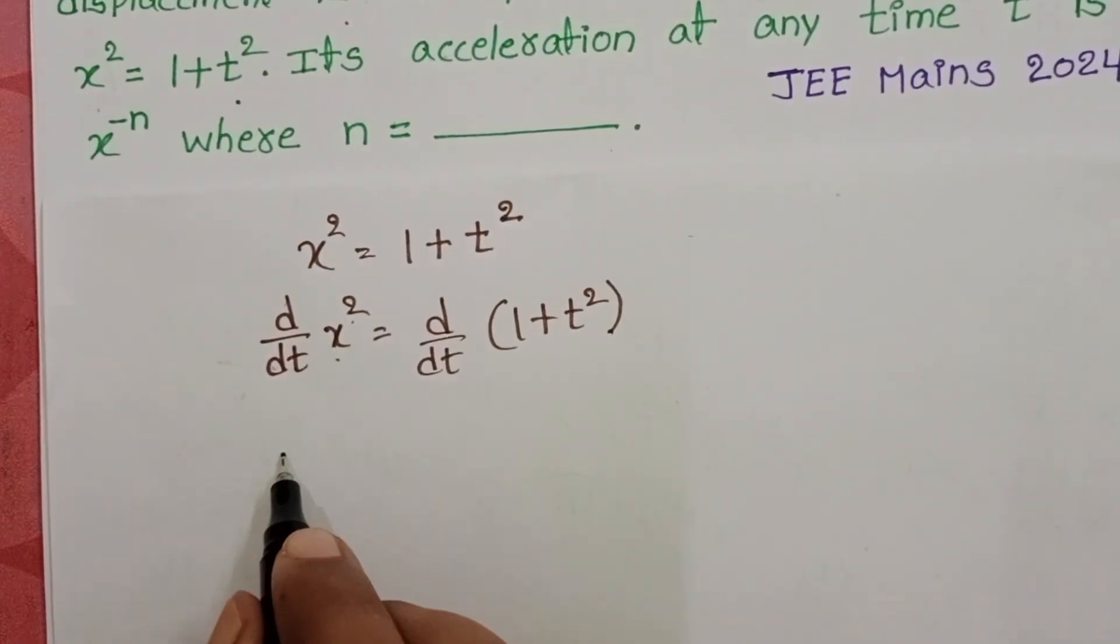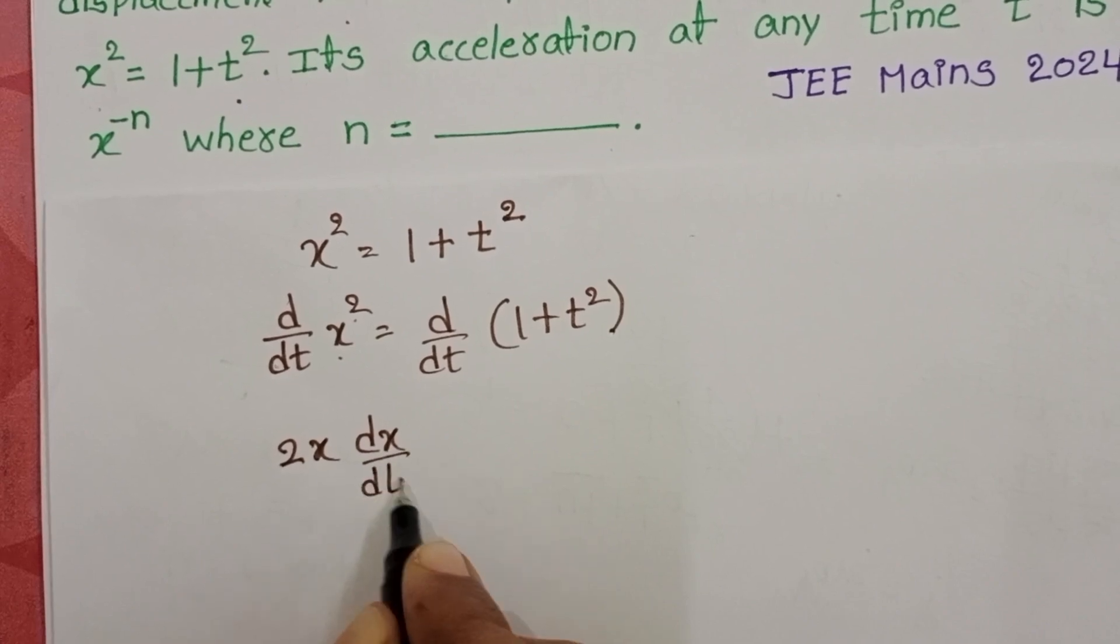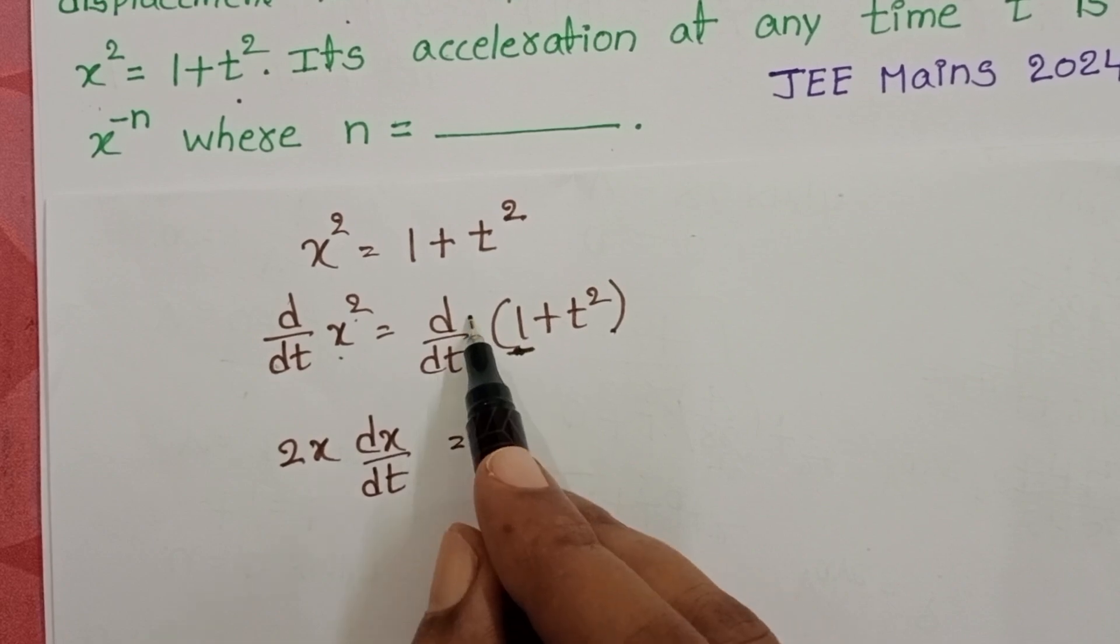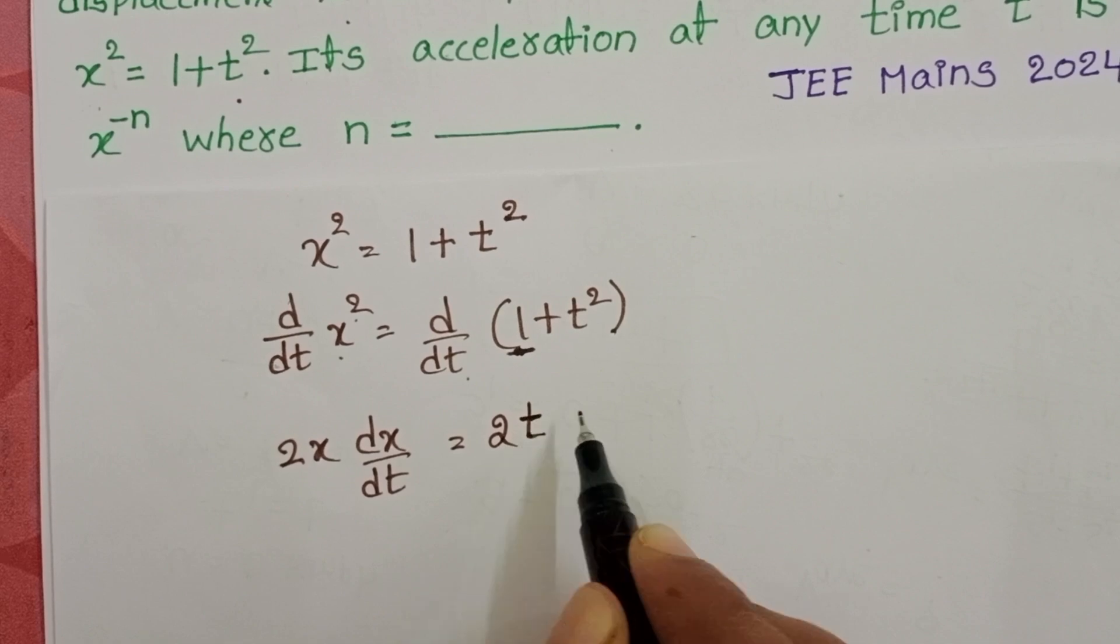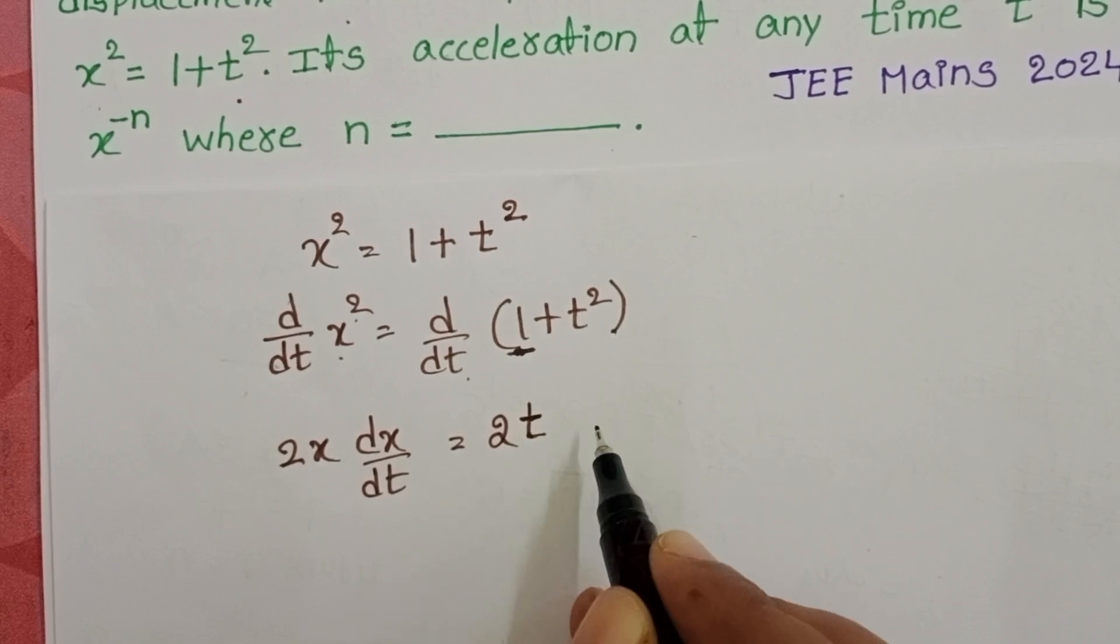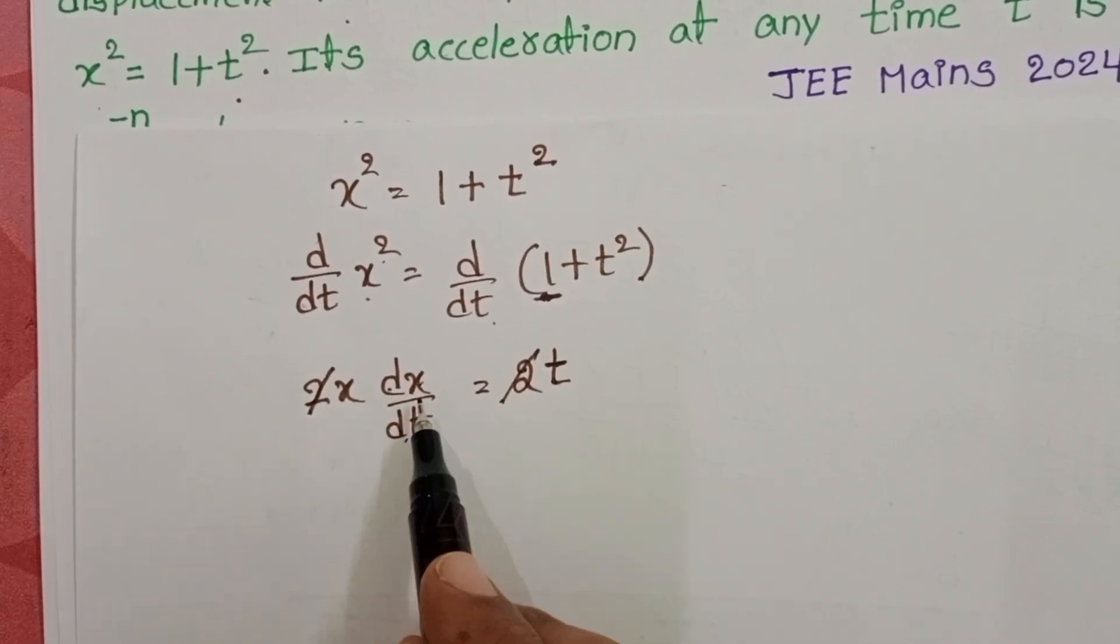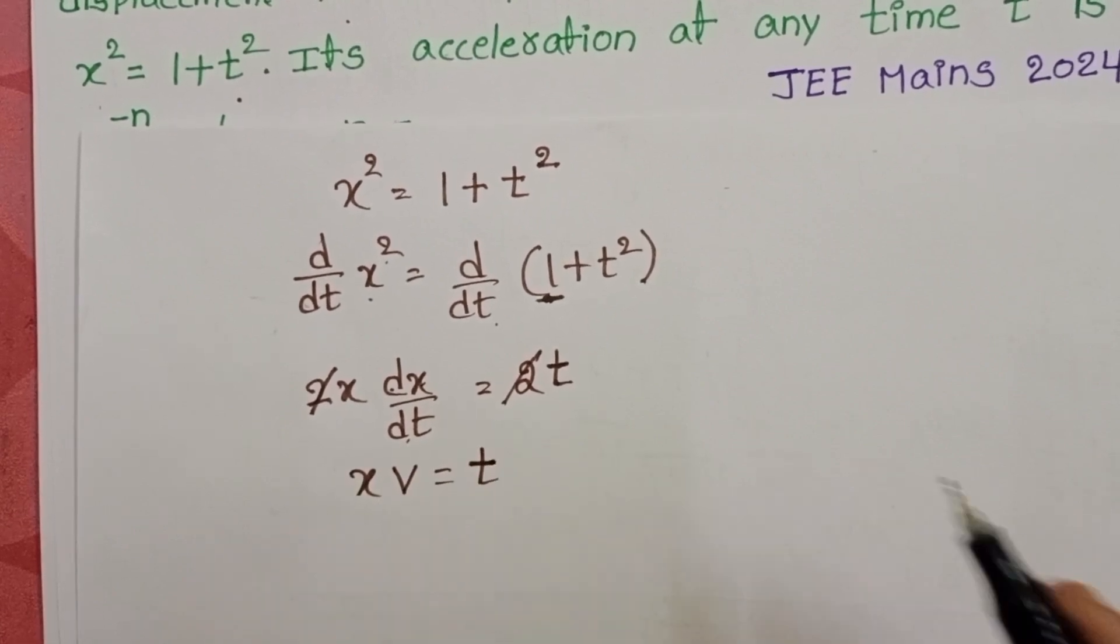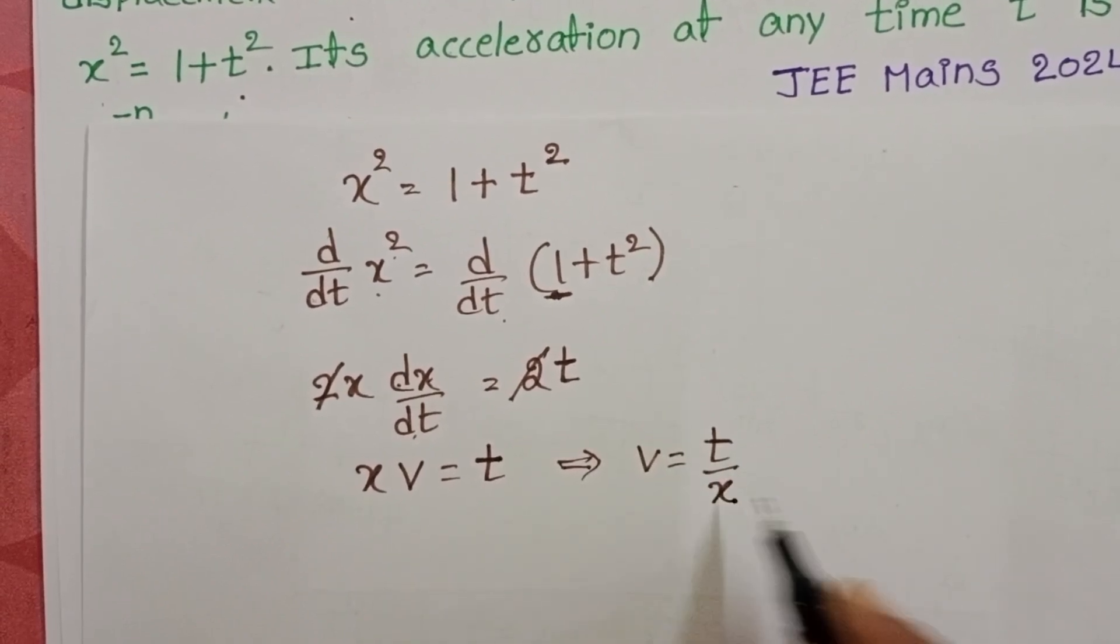Differentiation of x² becomes 2x dx/dt. And here 1 is constant, so differentiation of constant is 0. And d/dt of t² becomes 2t dt/dt. dt/dt is 1, and now on both sides 2 gets cancelled. dx/dt, displacement by time, equals velocity. xv = t. From this, v = t/x.